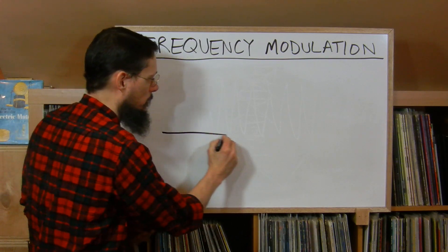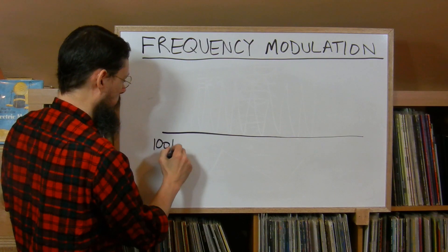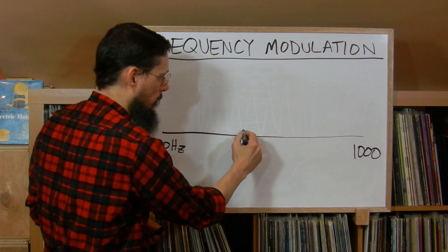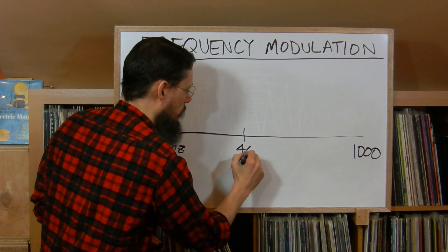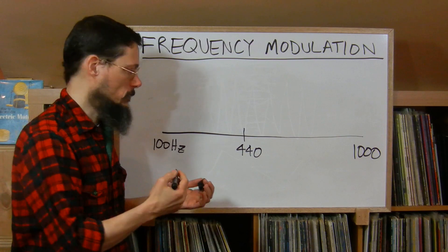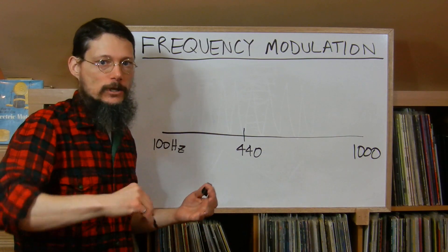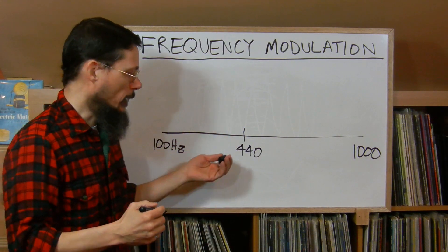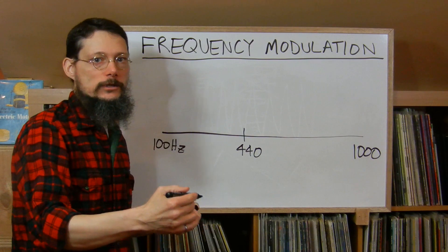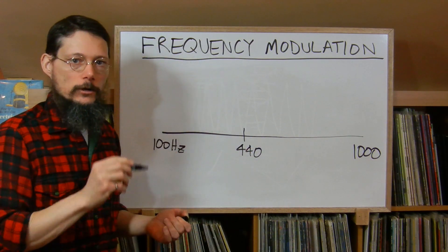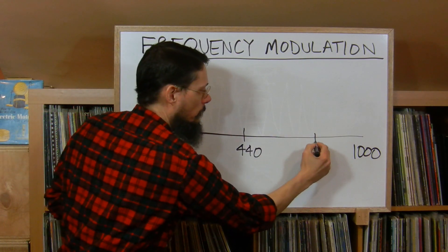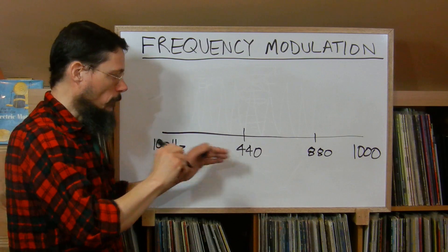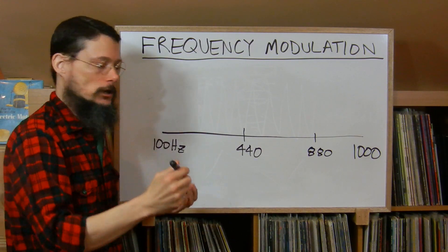Rather than draw the wave shape, I'll use this line to represent a range of frequencies, say from 100 hertz at the left all the way to a thousand hertz or one kilohertz. The fundamental pitch was 440 hertz. Let's consider going up and down a full octave — when you go up an octave, you double the frequency. So if you modulated 440 hertz up an octave, it goes to 880 hertz. But modulating it one octave lower brings it down to 220 hertz.